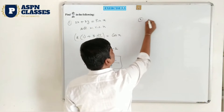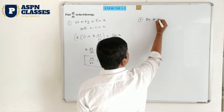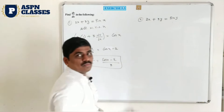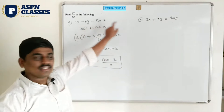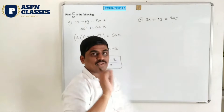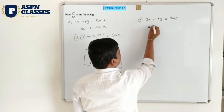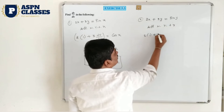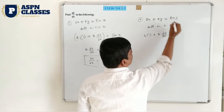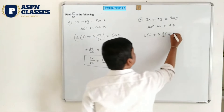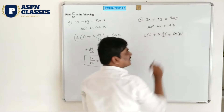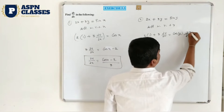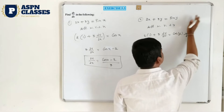Next, second example: 2x plus 3y equals sin y. Both examples are similar — here sin x is given, but in the second example sin y is there. Observe the changes. Differentiate with respect to x: 2 as it is, x differentiation is 1, plus 3 as it is, dy/dx. Sin y — sin differentiation is cos, so write cos of y. But y is the extra term, so differentiate one more time: dy/dx.